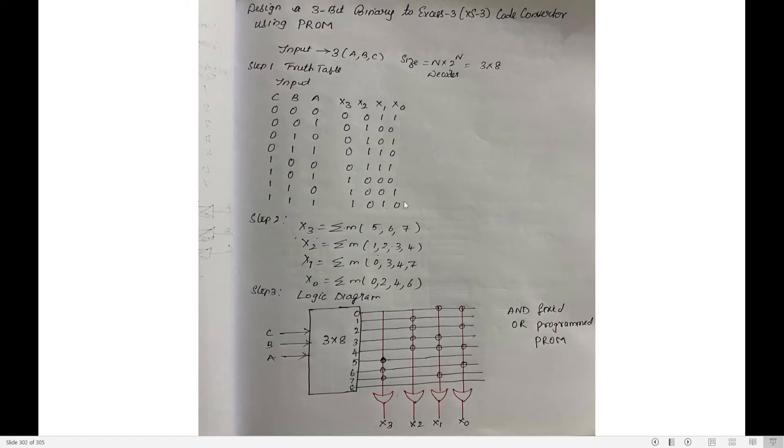Now write the whole thing in terms of min terms. What is X3? X3 has 1s in positions 5, 6, and 7. X2 has 1s in positions 1, 2, 3, and 4. X1 has 1s in positions 0, 3, 4, and 7. X0 has 1s in positions 0, 2, 4, and 6.